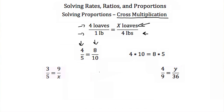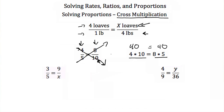Cross multiplying is just taking the numerator of the first ratio and multiplying it by the denominator of the second ratio, and then vice versa. So you multiply across this way, and then multiply across this way. So 4 times 10 is supposed to equal 8 times 5 if these ratios are in the same proportion. Well, 4 times 10 is 40, and 8 times 5 is 40, so these ratios are indeed in the same proportion.